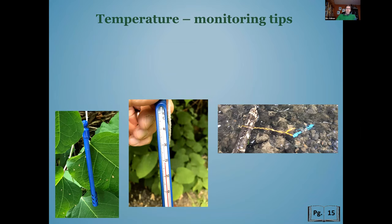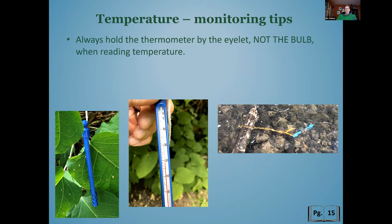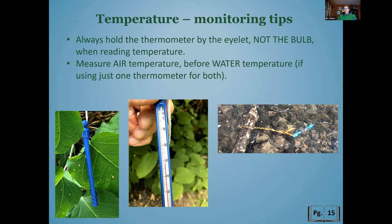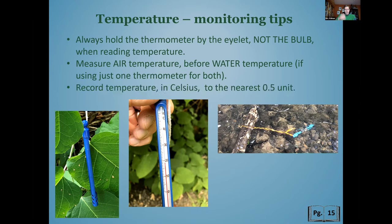Some monitoring tips for temperature: the thermometer has an islet end where the string is and a bulb end with little holes. Hold it by the islet end — not the bulb — because the warmth of your hands might affect the temperature reading. If using only one thermometer, measure air temperature first, then water temperature. If you dip it in water first and then it's evaporating, you could get evaporative cooling that affects your reading. We record temperature in Celsius, to the nearest 0.5 degrees.